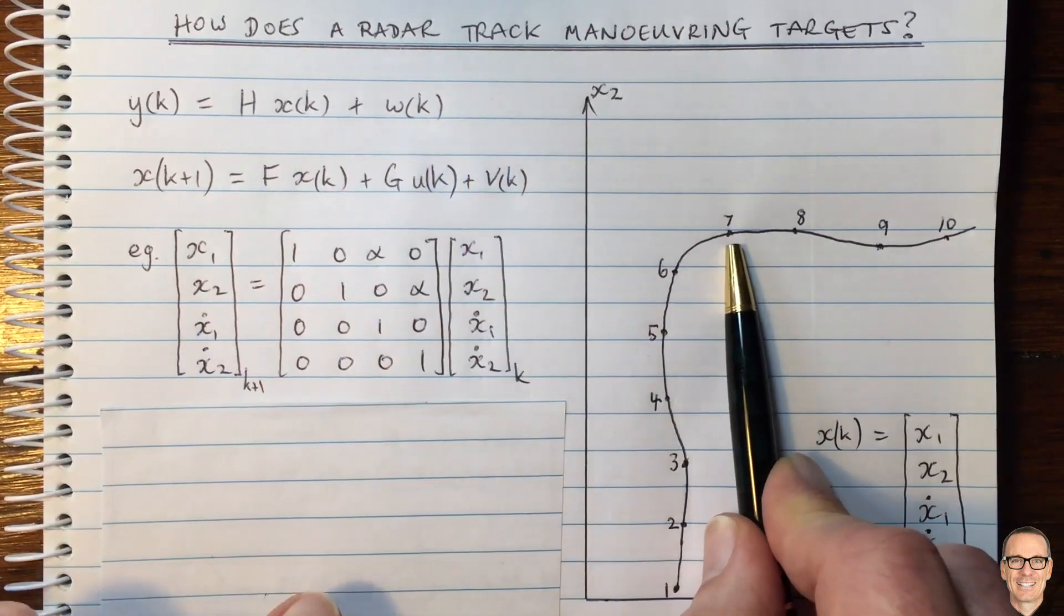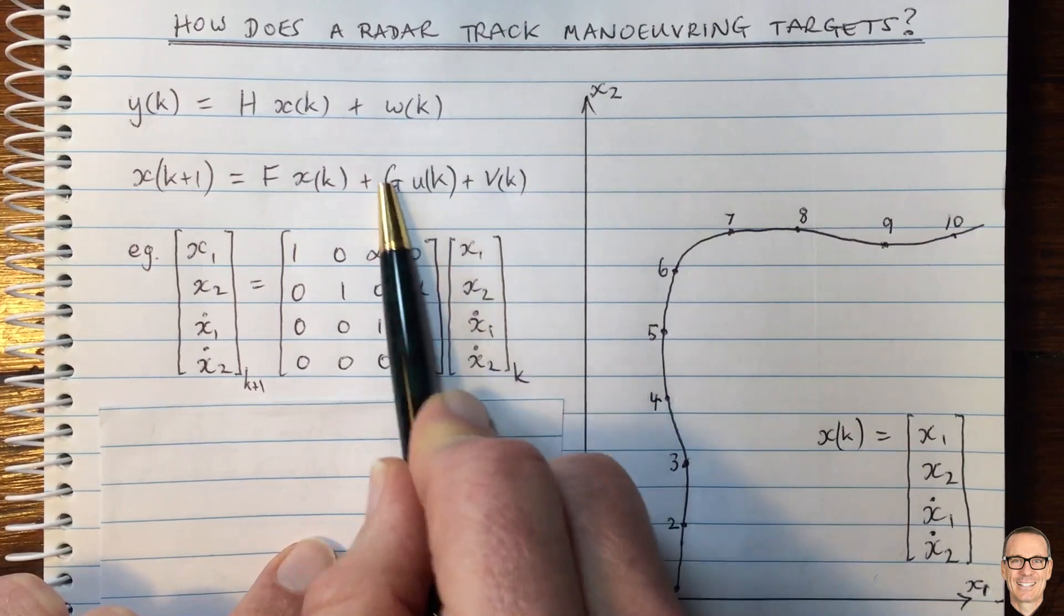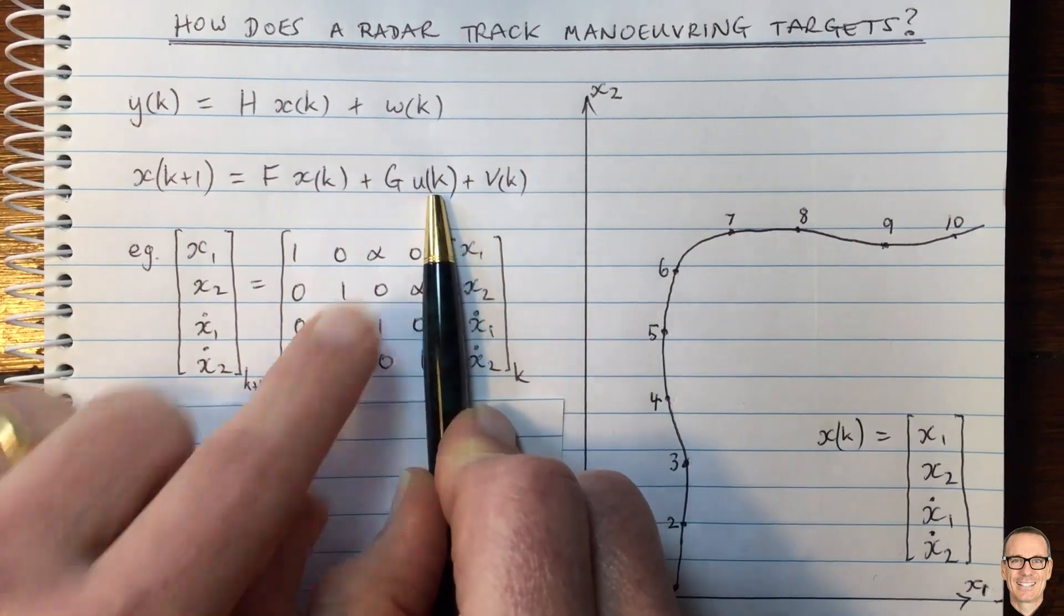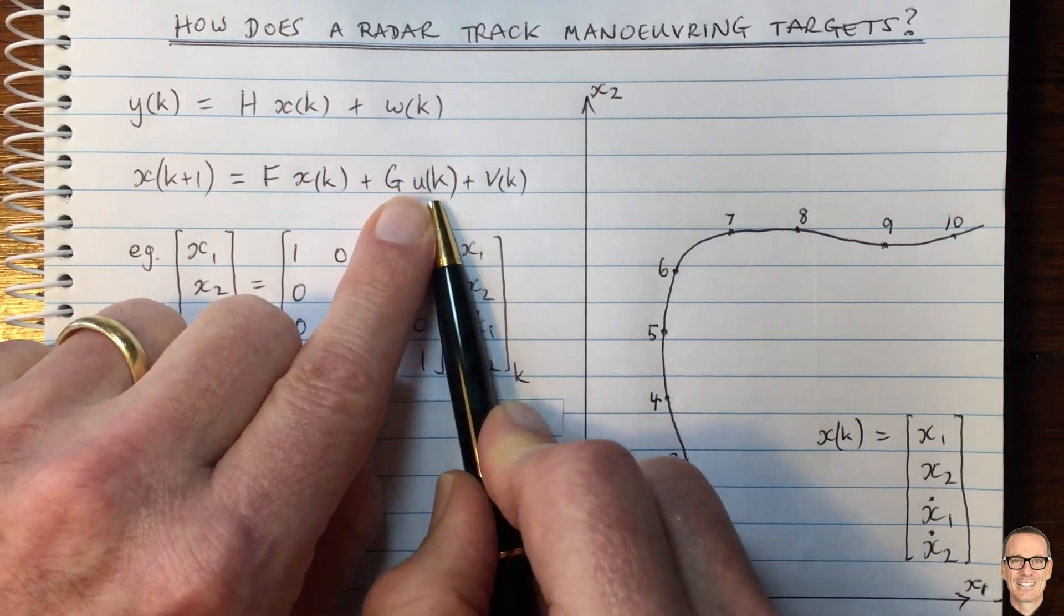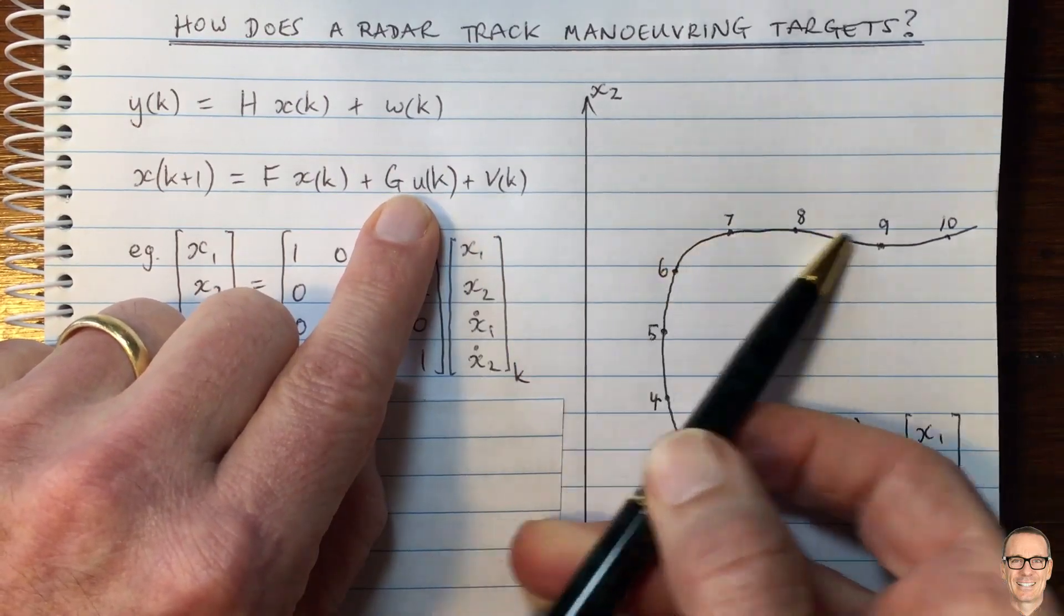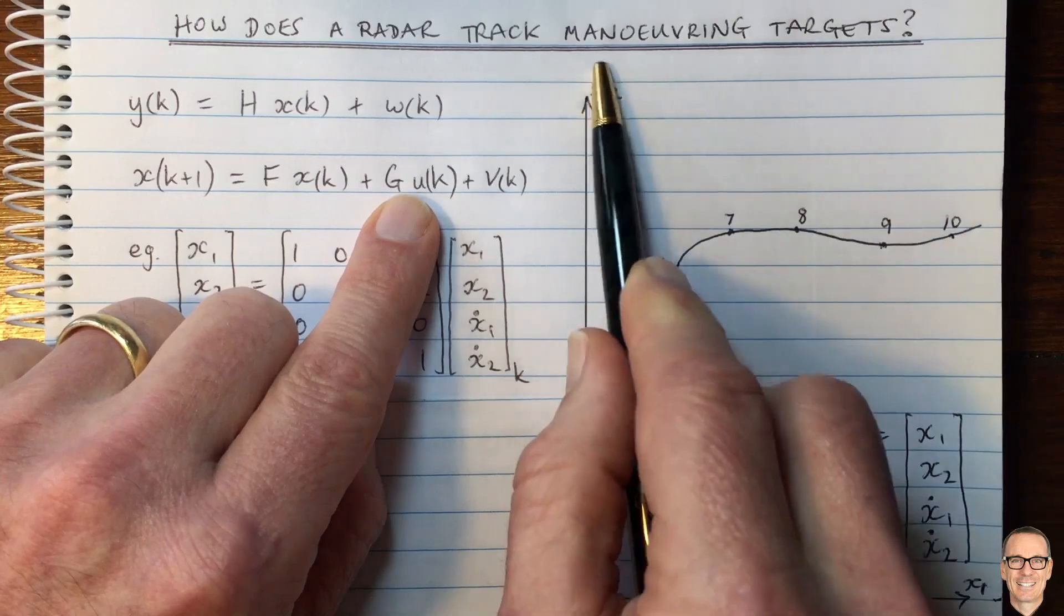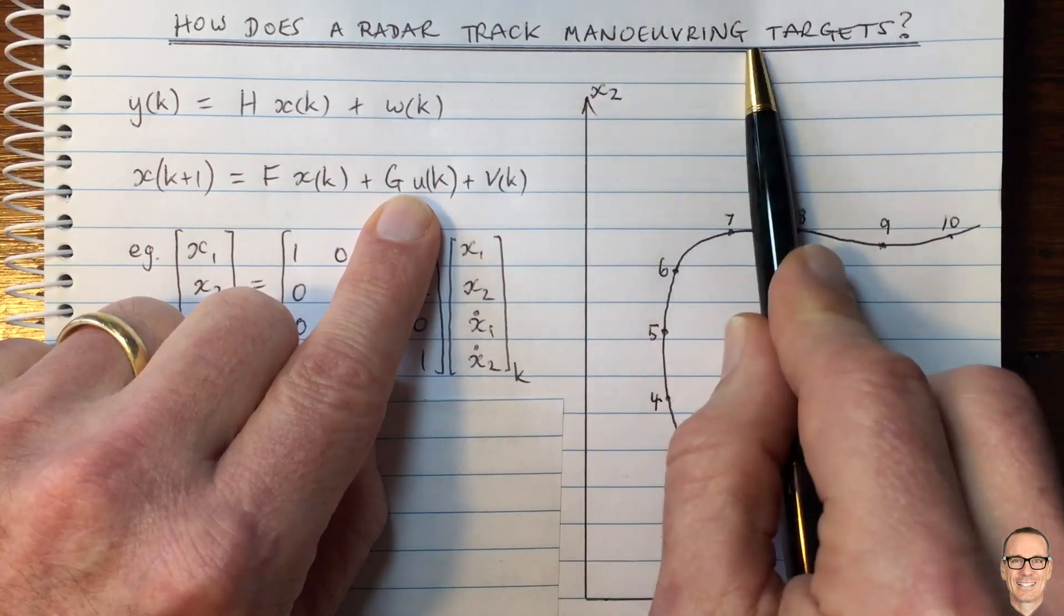And then at time seven, a maneuver kicks in. So uk might be zero up until seven, and at k equals seven, uk might be the value such that a right-hand turn maneuver happens. So this is what we're dealing with: maneuvering targets.